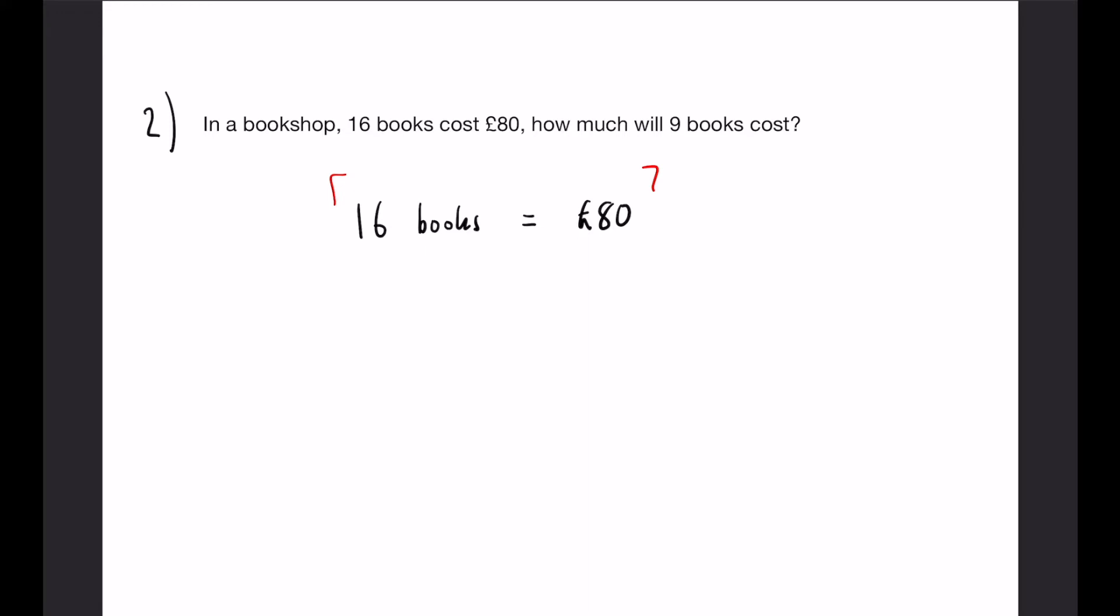So we want to work out how much 9 books will cost. Again, it's quite difficult to go from 16 straight to 9, so we're going to go down to something first and then up to something after that. Typically with these, if it works, 1 book is going to be easiest. You could go to 2 books or 5 books if it works out well, but in this case 1 is going to be the best bet.